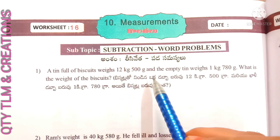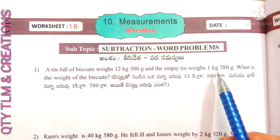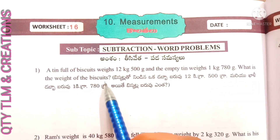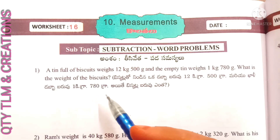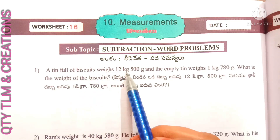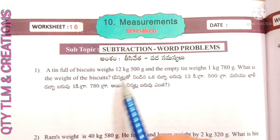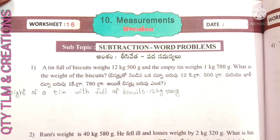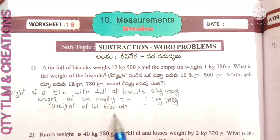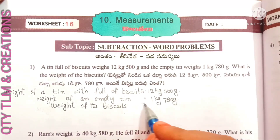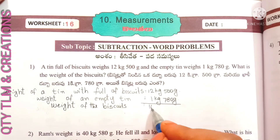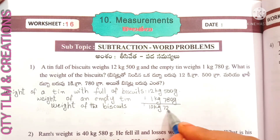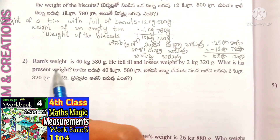Weight of a tin full of biscuits equals 12 kilograms 500 grams. Weight of an empty tin equals 1 kilogram 780 grams. Therefore, weight of the biscuits equals 10 kilograms 720 grams.